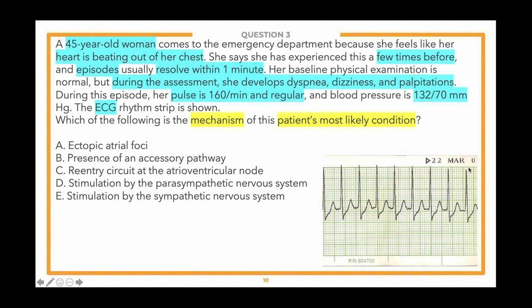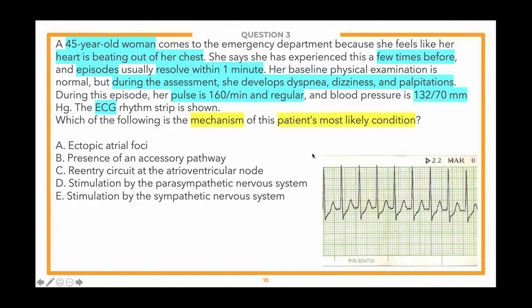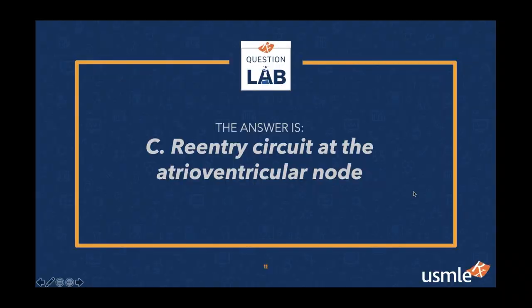49% of you selected re-entry circuit at the AV node; in second place was stimulation by the sympathetic nervous system. The correct answer is indeed C, and 49% of you got it right — great job everyone.